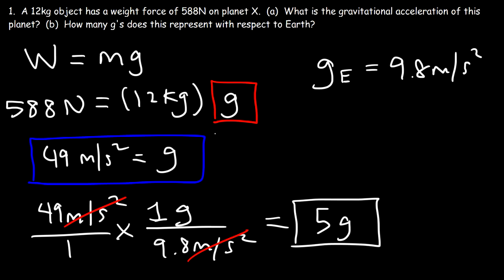So what this means is that planet X has a gravitational acceleration that is 5 times greater than what you would have on Earth. So let's say if a person weighs 600 Newtons on Earth. The person will weigh 5 times heavier on planet X. They will have a weight force of 3,000 Newtons.